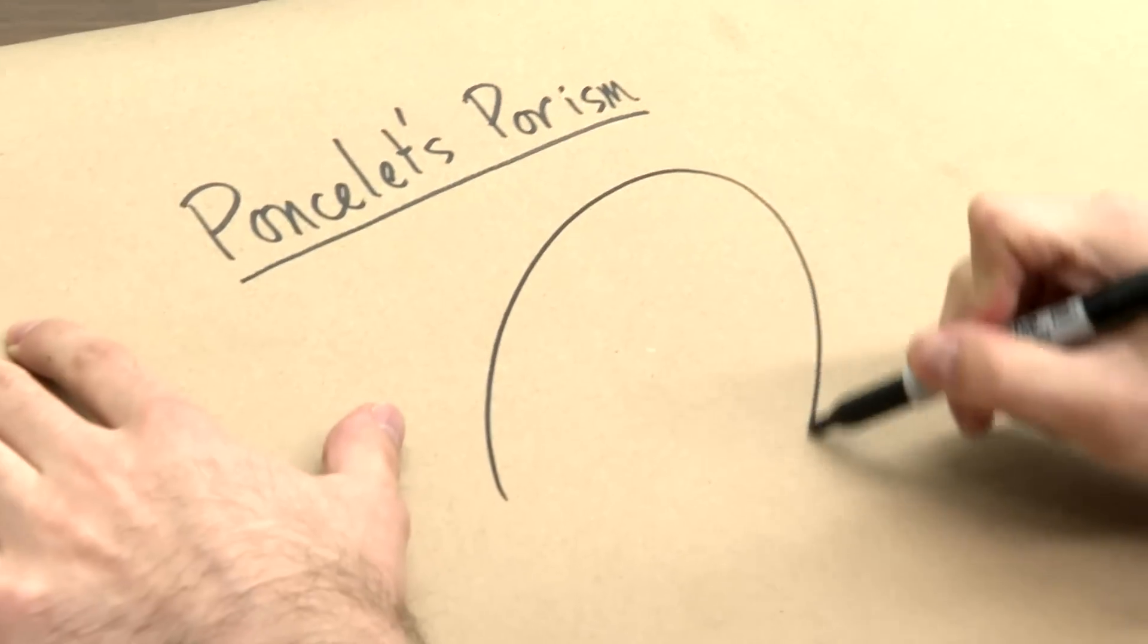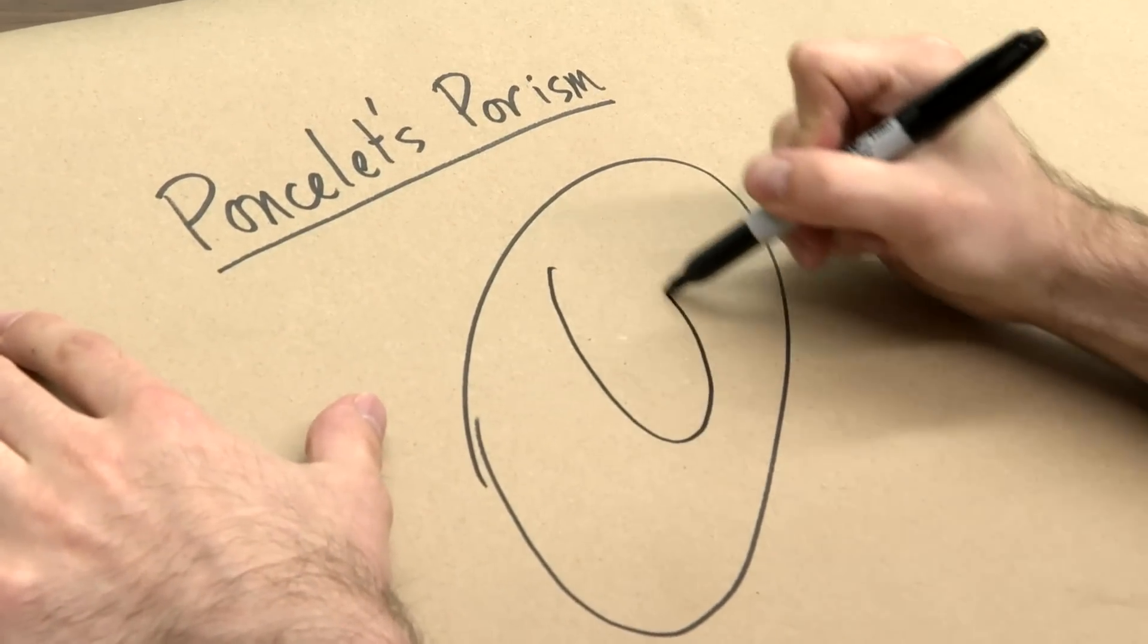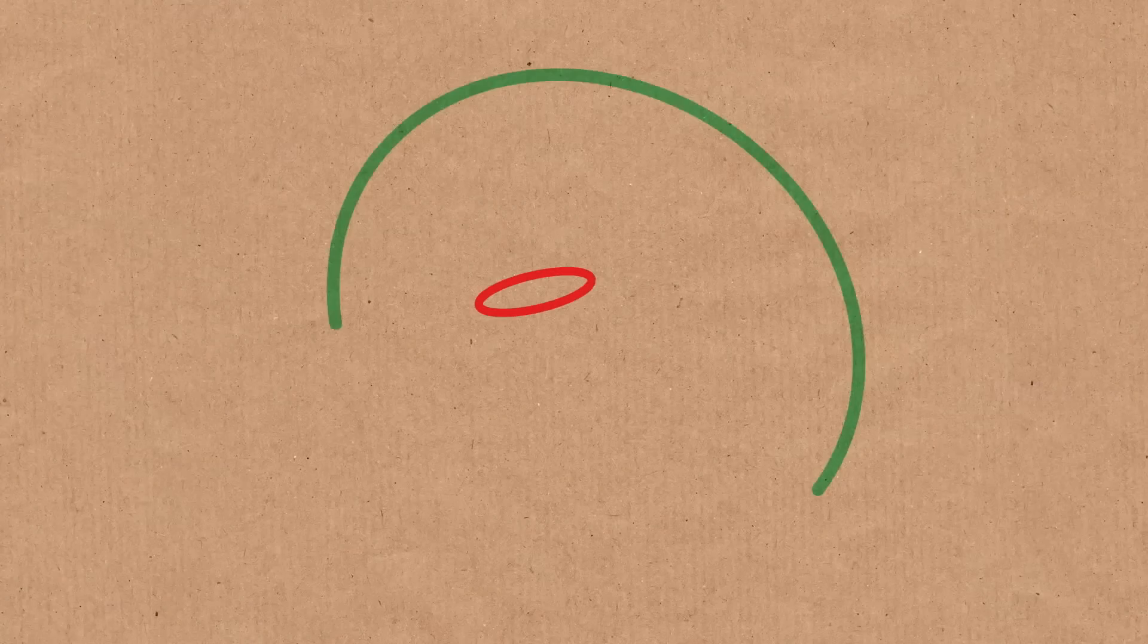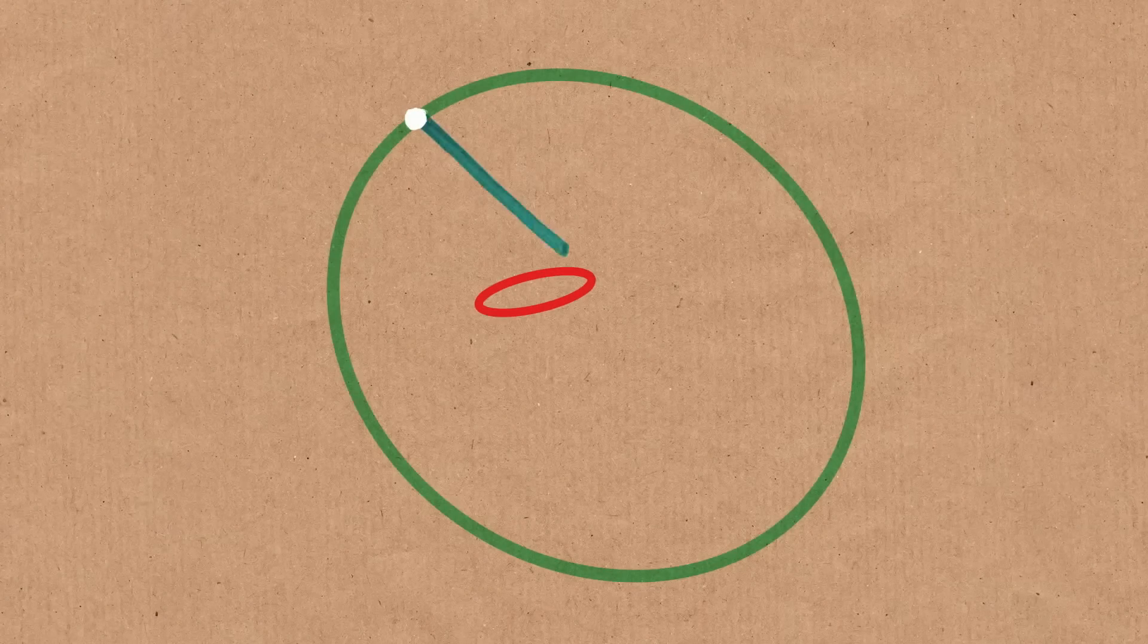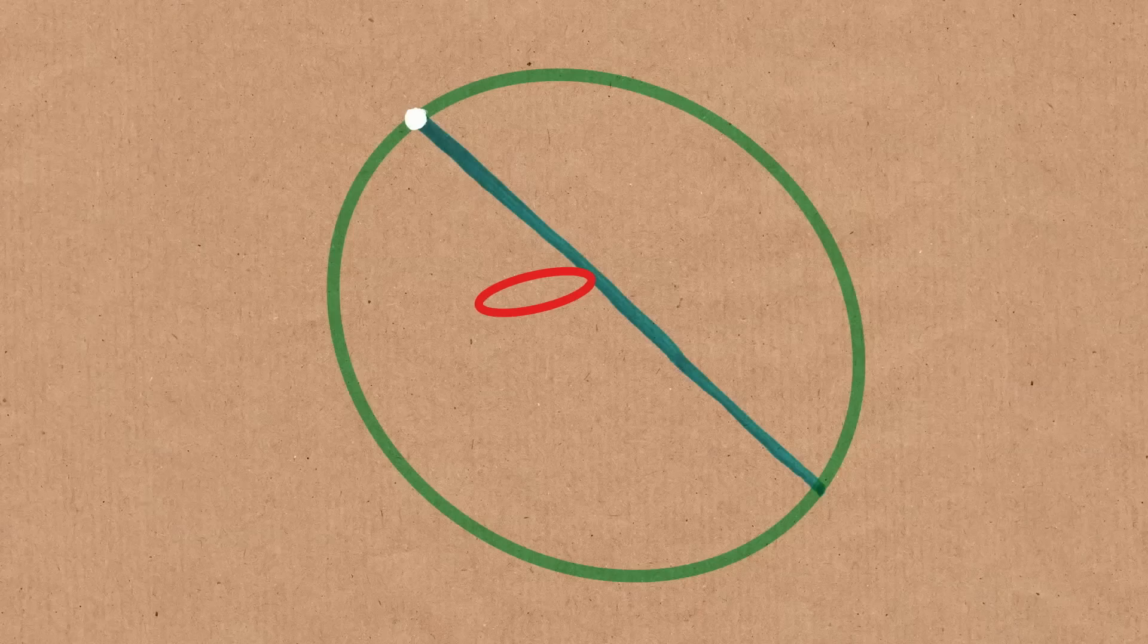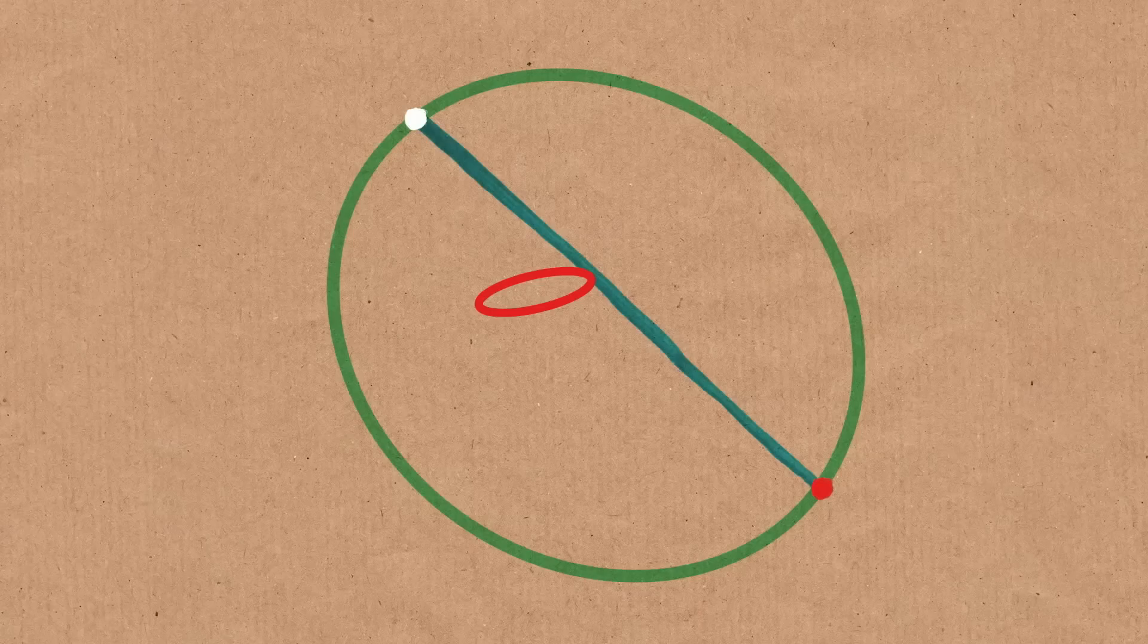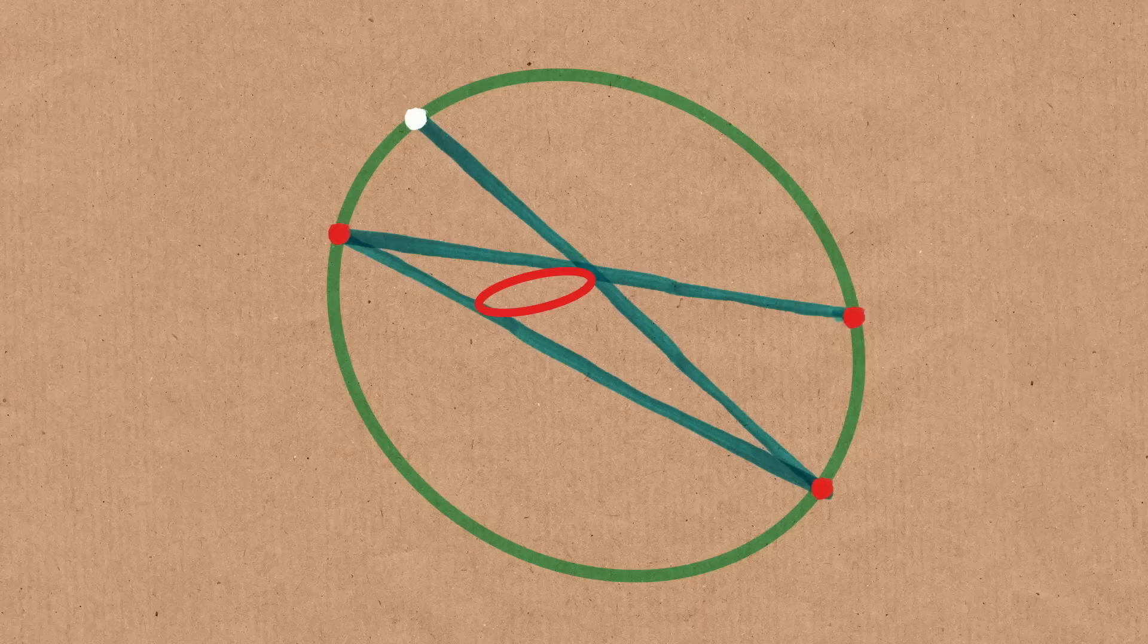So you start with two conics, like two ellipses. Let's say one is inside the other. And what do you do? You start with a point on one and you draw the tangent line to the other one through that point, or one of the tangent lines. And it intersects the other conic at some point. And now you can take this point and draw... Well, we already have one tangent line through this point and the second conic, but you draw the other one. Now you get a third point and you keep going. You draw the tangent line and you keep bouncing around.